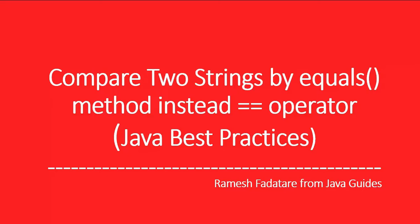In this video I'm going to clarify why we should use the equals method to compare two strings instead of the equality operator. We use the double-equals operator to compare primitive types such as integer, long, double, and character. We use the equals method to compare two objects in Java. In the case of strings, we use equals to check the content, not the reference. We use double-equals to compare the references of string objects.